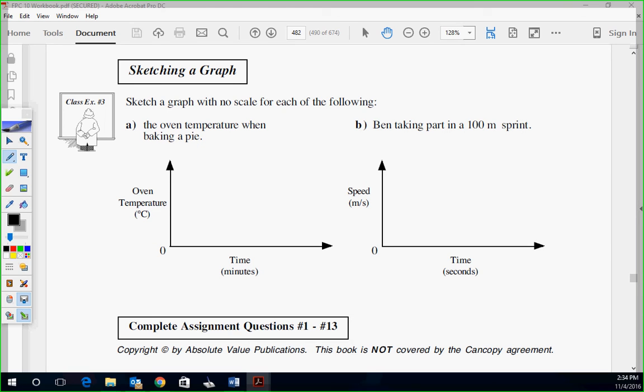This one, sketch a graph with no scale for each of the following: the oven temperature when baking a pie. So if you're going to bake a pie, the first thing you're going to do is preheat the oven. So it's going to go from zero to the temperature you want. Then it's going to stay at that temperature while you're baking the pie until you turn the oven off, and then it's going to go back down to zero. That could be the example of temperature when baking a pie.